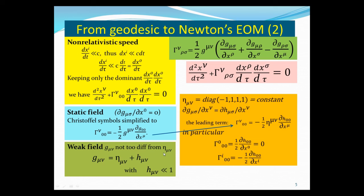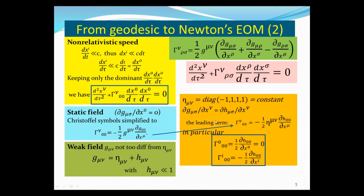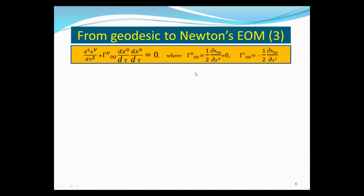Now we have four equations with index nu equal to zero, one, two, three. When nu equals zero, the Christoffel symbol zero-zero-zero vanishes, so the second term drops out, and the equation says the first derivative with respect to the curve parameter is constant. For the nu equals i (spatial) part, the second derivative with respect to tau becomes the second derivative with respect to coordinate time x-naught, factored out. The dominant term is the zero component, so we can replace by keeping only the x-naught term.